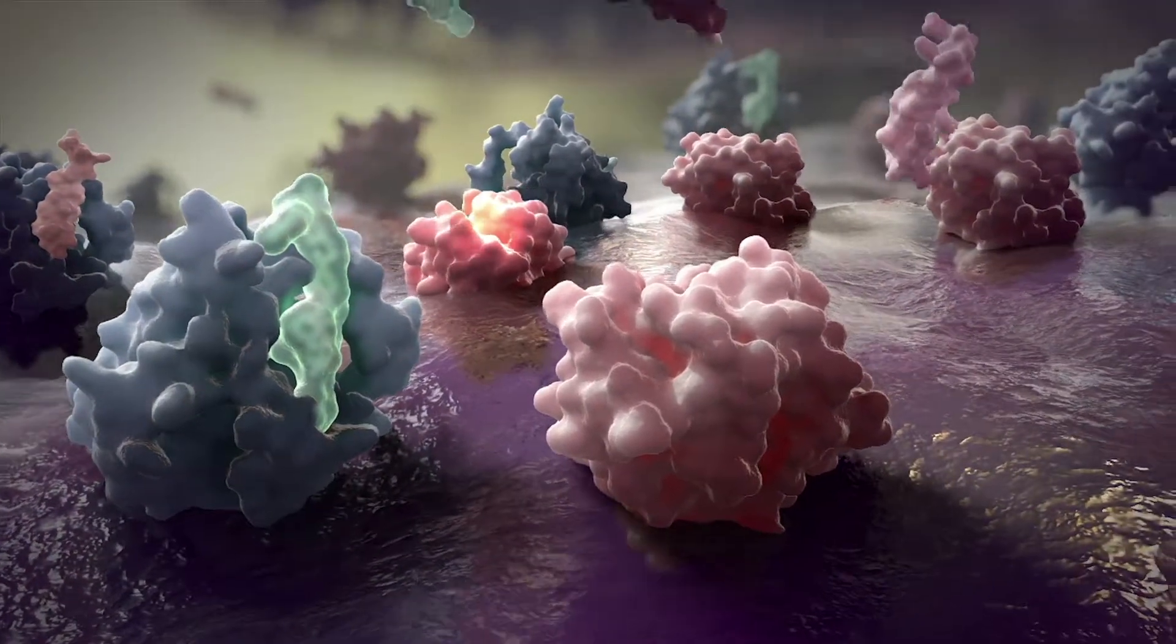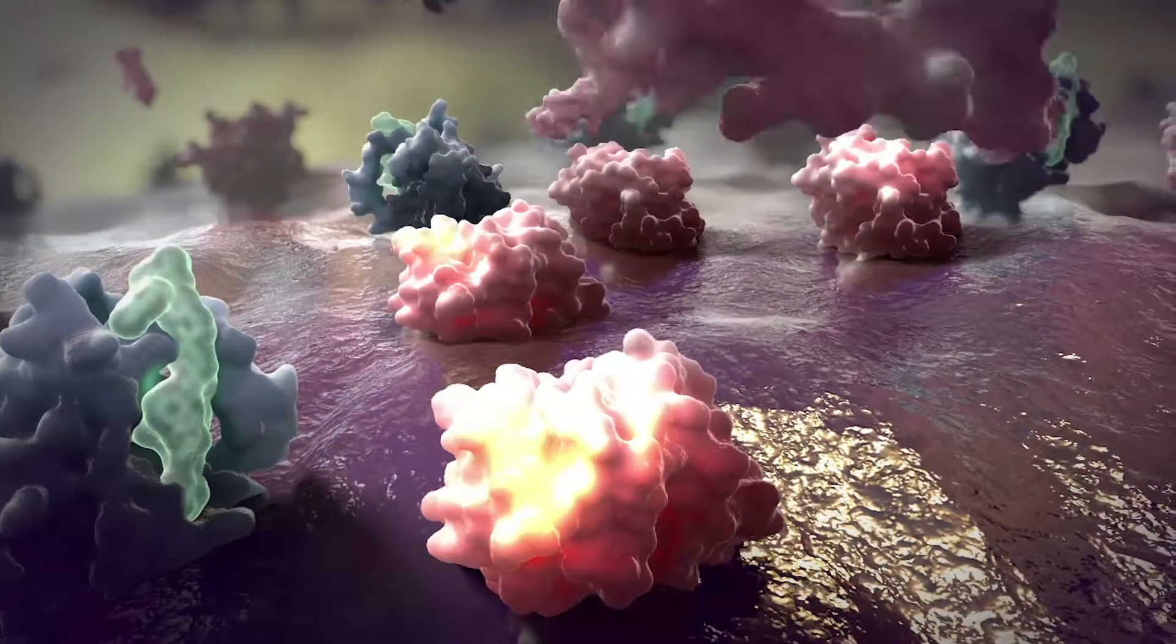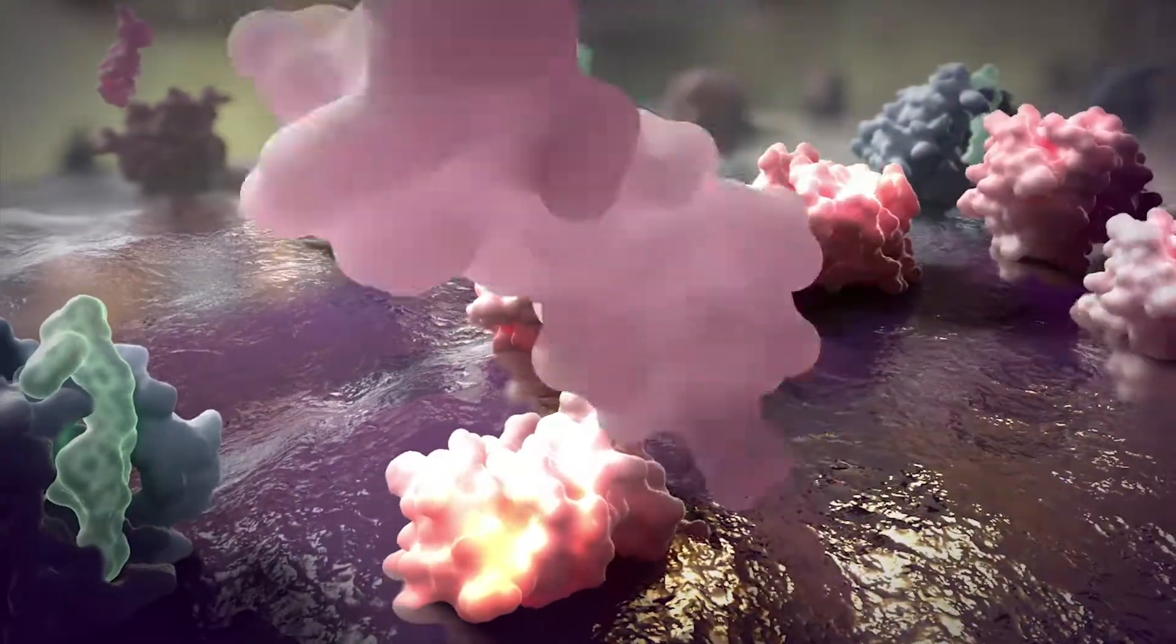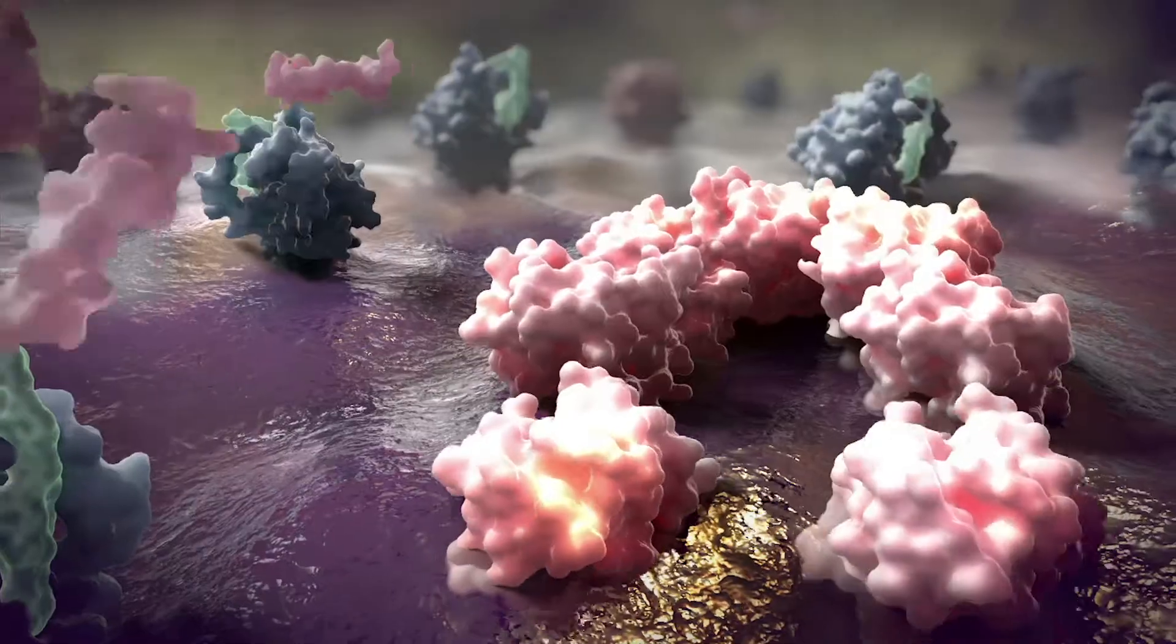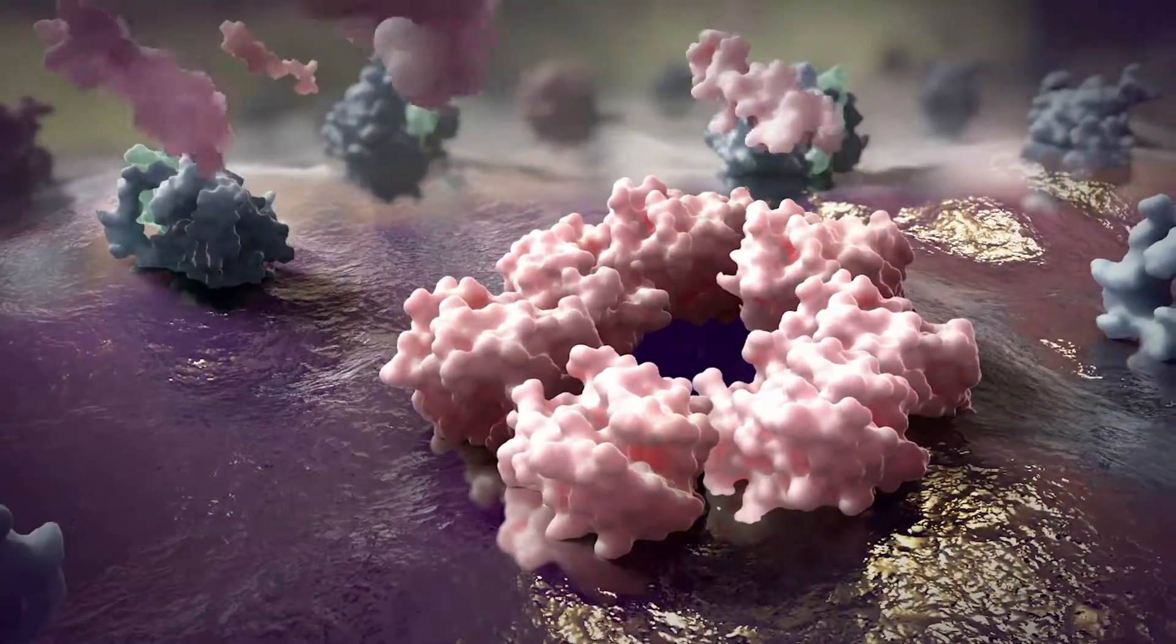With BCL2 inhibited by 199, pro-apoptotic proteins are left free to promote pore formation in the mitochondria, signaling a point of no return for the cell.